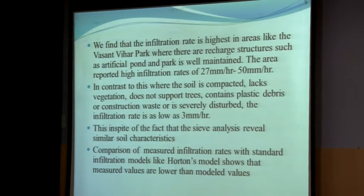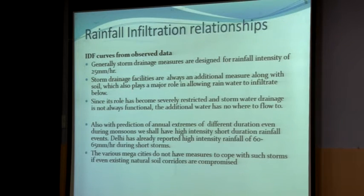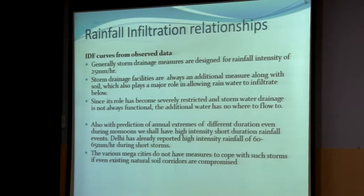We also did modeling studies with Horton's model. Although the data follows the model, the measured rates are actually lower than the Horton's rates. Relating this to rainfall characteristics: in urban areas we have short spells of rainfall. Storm drainage structures, as per our manual, are designed for a rainfall intensity of 25 mm per hour. But in Delhi we find short rainfall durations with high intensity of around 60 to 65 mm per hour.